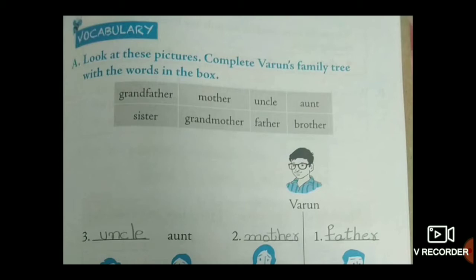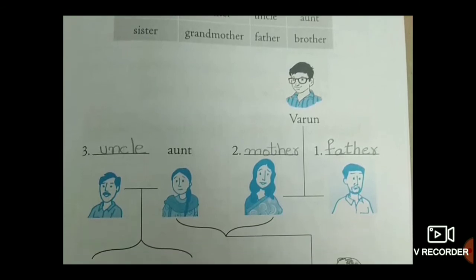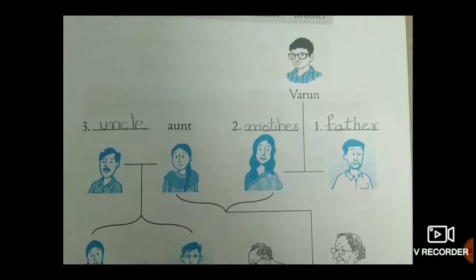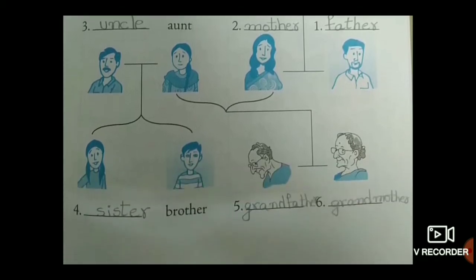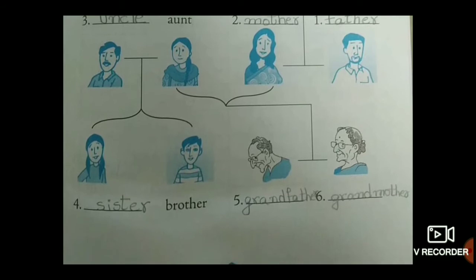Look at the picture carefully and choose the correct option from the box. See Varun — V-A-R-U-N. In the first picture, the relation is father — F-A-T-H-E-R. Next one, mother — M-O-T-H-E-R. Next one is aunt. Pair aunt to uncle — U-N-C-L-E, uncle; A-U-N-T, aunt. Next, number four: sister — S-I-S-T-E-R, sister; B-R-O-T-H-E-R, brother.